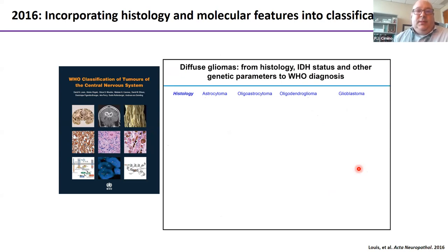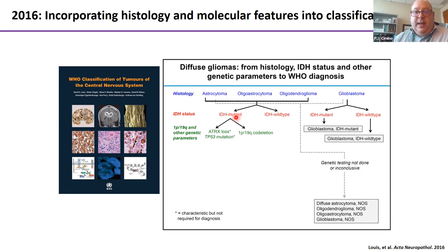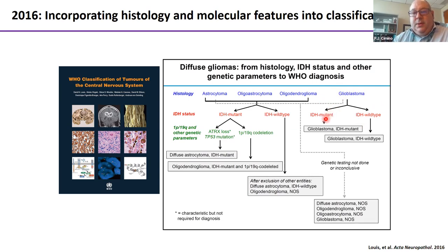In 2016, we incorporated histology and molecular features into classification with the updated system. IDH mutant lower-grade tumors with 1p19q co-deletion go down the oligodendroglioma route; without co-deletion, they usually have p53 mutations or ATRX loss, indicating a diffuse astrocytoma IDH mutant. Glioblastomas are classified based on IDH mutational status as either IDH mutant or IDH wild type, though this will change going forward.